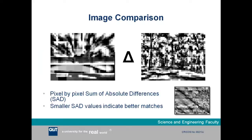The Sequence SLAM algorithm requires some form of image comparison method. For these experiments we used sum of absolute differences, or SAD. We compare corresponding pixels in each downsampled image, work out the absolute intensity difference, and take the mean over the entire image to get one difference score. By comparing the current image to all past images for every new frame, we formed the image difference matrix shown earlier. In this matrix, smaller SAD values indicate better matches because they represent a smaller difference between two images.